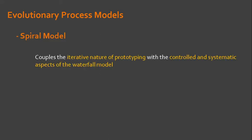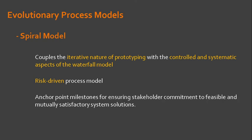The spiral model is a realistic approach to the development of large-scale systems and software. Because software evolves as the process progresses, the developer and customer better understand and react to risk at each evolutionary level. The spiral model uses prototyping as a risk reduction mechanism, but more importantly, enables you to apply the prototyping approach at any stage in the evolution of the product.